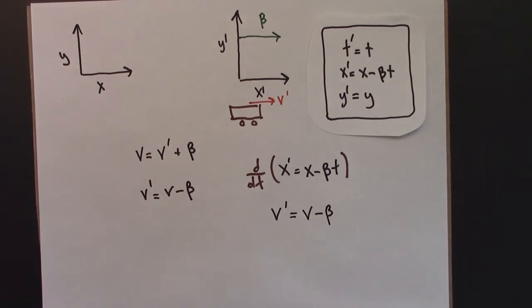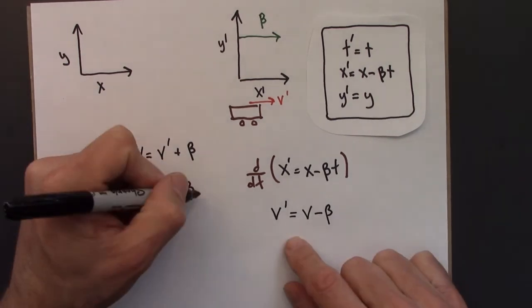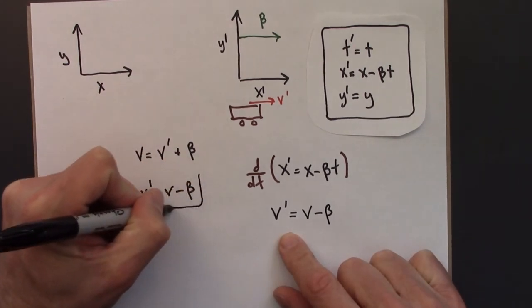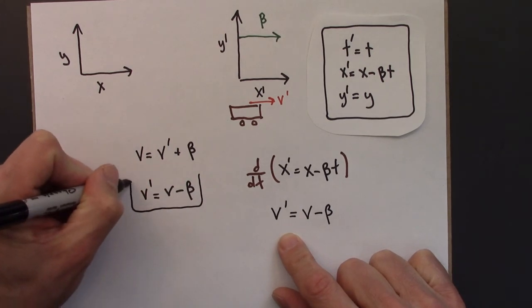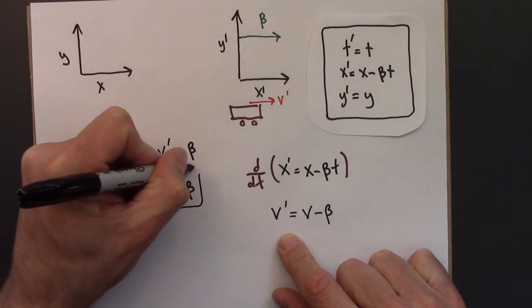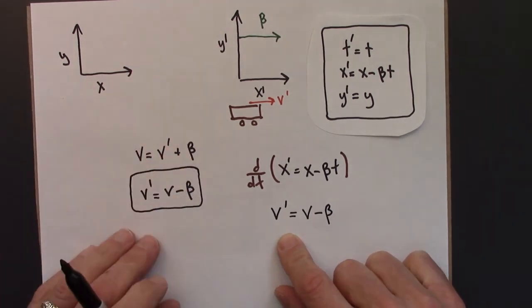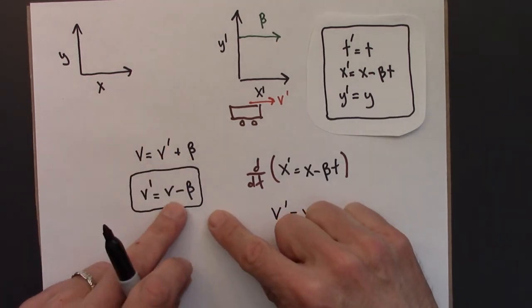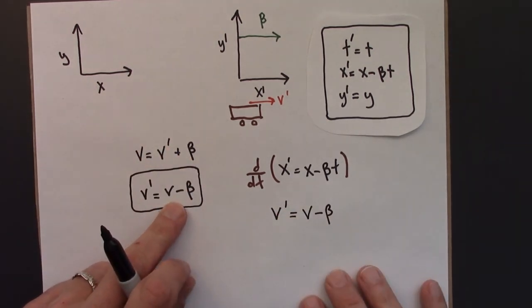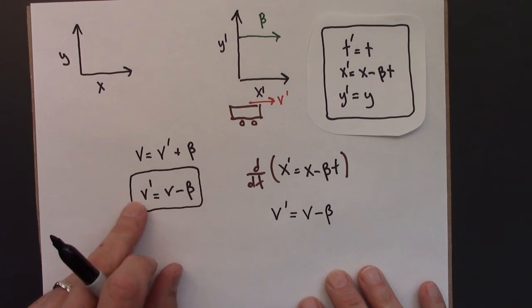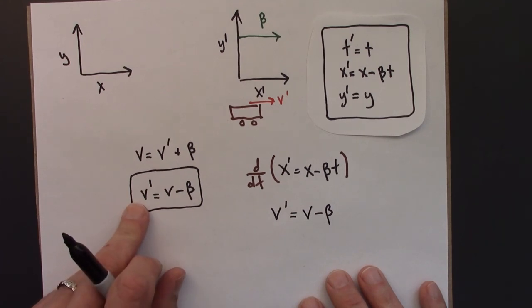In any event, this equation tells us how we can relate velocity measured in one frame to velocity measured in another frame.